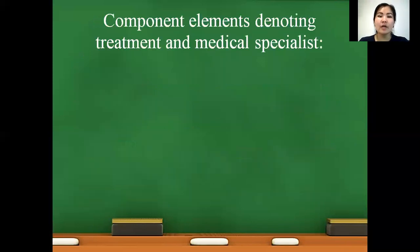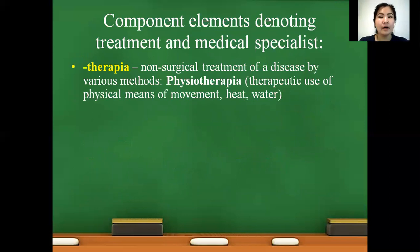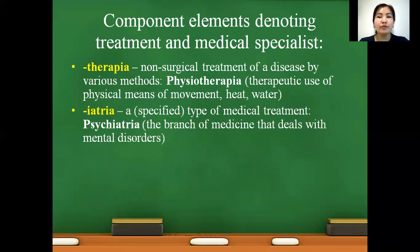Next type of component elements denoting treatment and medical specialists. Therapia — non-surgical treatment of a disease by various methods except surgery. Example: physiotherapy — therapeutic use of physical means such as movement, heat, and water. Next: iatria — a specified type of medical treatment or branch of medicine. Example: psychiatria — a branch of medicine that deals with mental disorders.